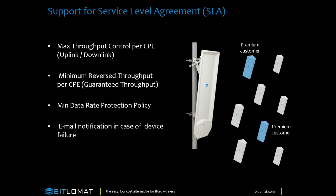Support for service level agreements — this is something our competitors really don't do, and it's so easy to do. You can set up as many service levels as you'd like — if you want to set up ten and four for one customer and two and one for another, you have the ability to do that. You can also set minimum throughput, so if you have a customer that no matter what needs a meg in either direction, you can set it so that if available they have first access to it, and then it's available to anybody else if they're not using it. We also support email notification in case the device fails or degrades.